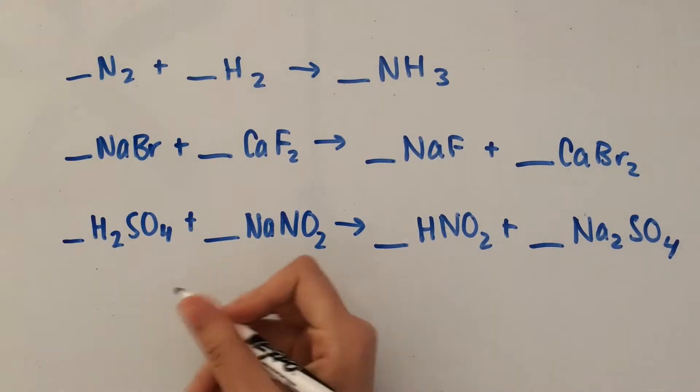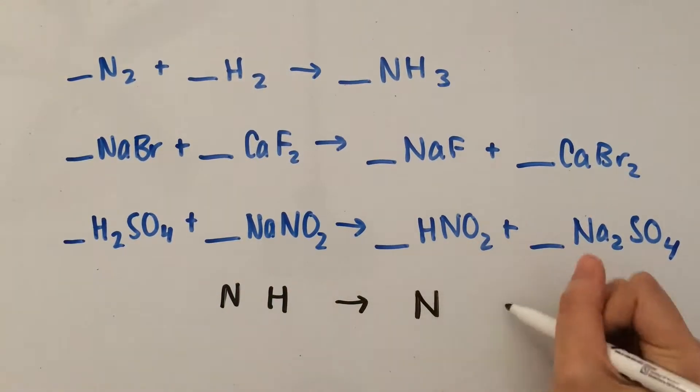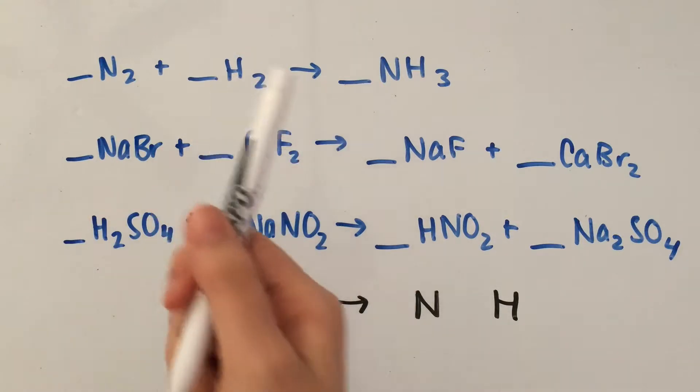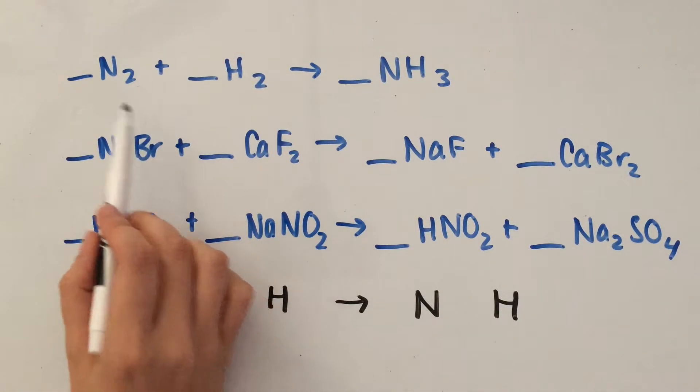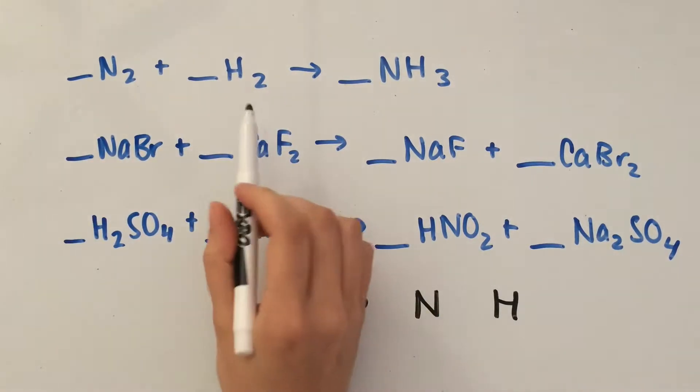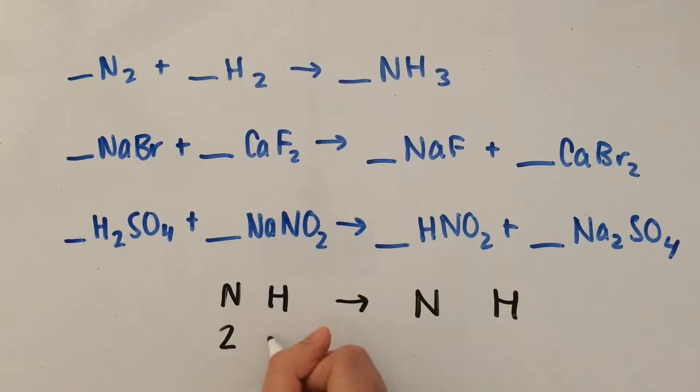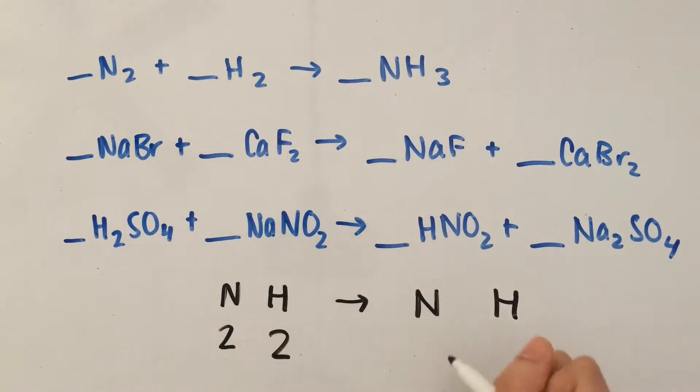I'm going to set up a list to organize myself. The only elements here are N and H. On the left side we have two N's and two H's, and on the right side I have one N and three H's.